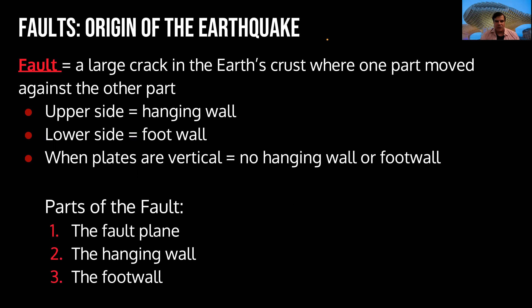The fault is a large crack in the Earth's crust, and we have two types of walls: a hanging wall and a foot wall. When the plates are vertical, we don't have a hanging or foot wall. For example, if you have a plate that is broken in this sense, and you have the other one that is broken on the other side.